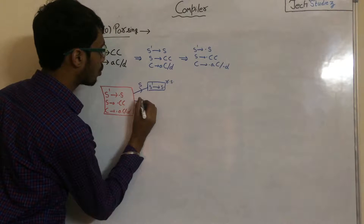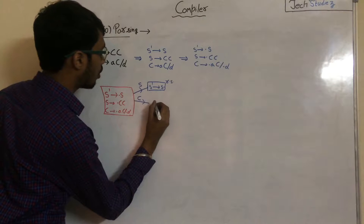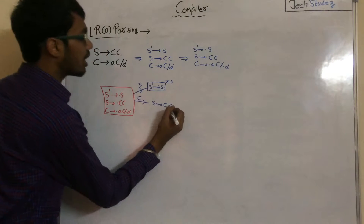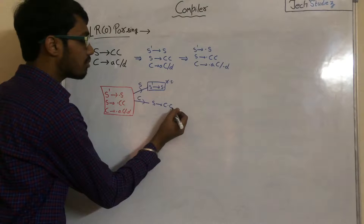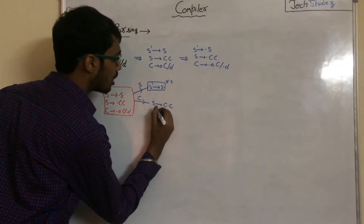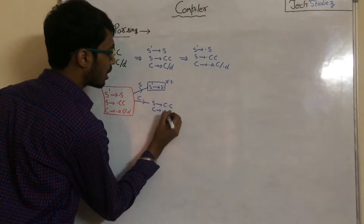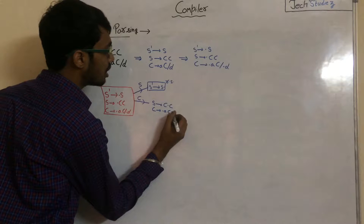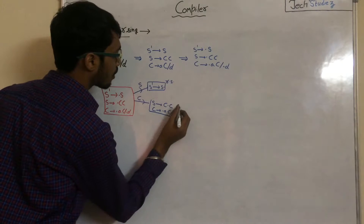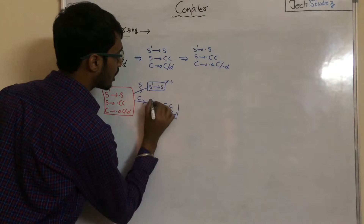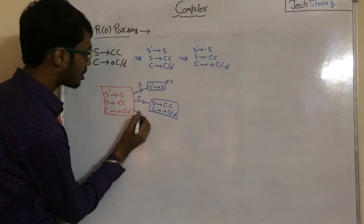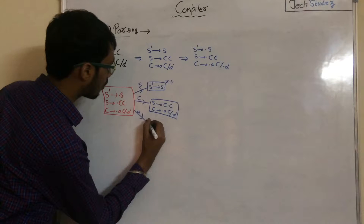Now take a GOTO move with C — what we get is S to C·C. After the dot we get a non-terminal symbol, so we have to add all productions from C: C to ·AC and C to ·D. This forms another set of canonical items.